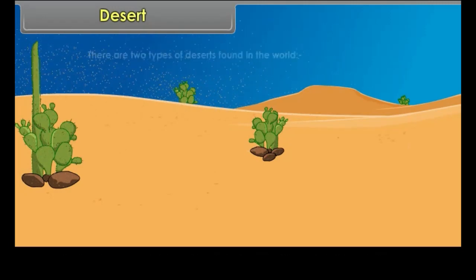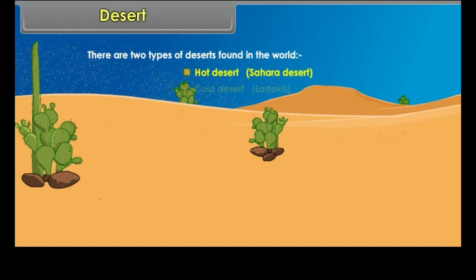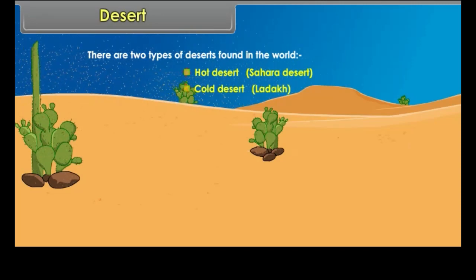There are two types of deserts found in the world: Hot Desert — Sahara Desert, and Cold Desert — Ladakh.